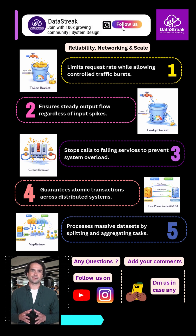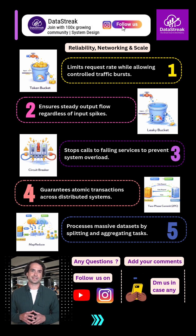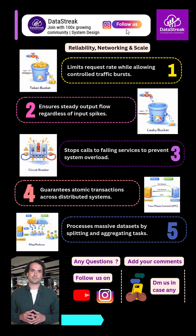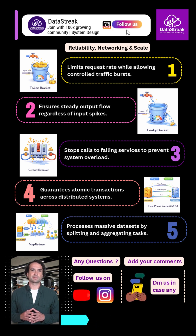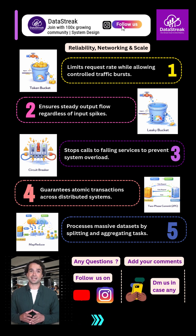Finally, reliability and performance. Token bucket and leaky bucket control traffic. Circuit breaker prevents cascading failures. Two-phase commit handles distributed transactions. And MapReduce processes data at planetary scale.